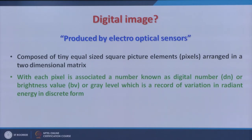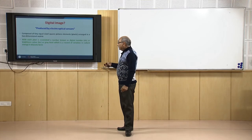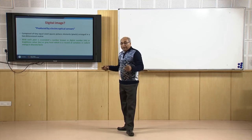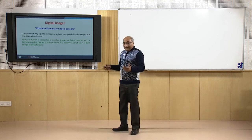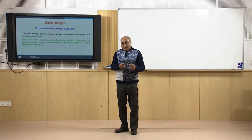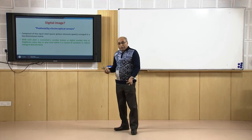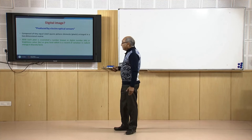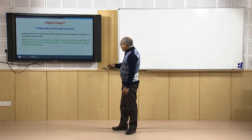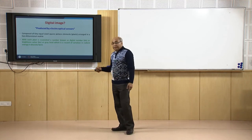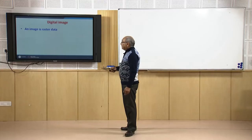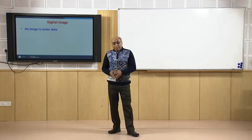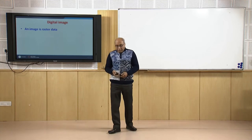What is being recorded is the brightness value. If an object is reflecting very high energy, a higher brightness value will be recorded as a higher digital number; if reflecting very low, a lower value is recorded. When we convert these digital numbers into grey values, darker areas show less-reflecting objects and brighter areas show high-reflecting objects. The digital image — also called a raster image in GIS terminology — is nothing but a two-dimensional matrix.